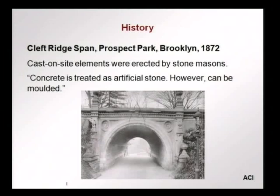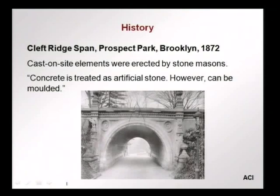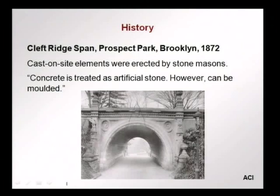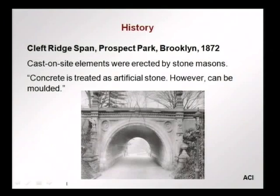If we go back in history and look at initial applications of concrete for structural purposes, we come across this very nice arch — small though elegant — from Prospect Park, Brooklyn, USA, built in 1872, where concrete was essentially used to replace stone blocks. This was erected by stone masons using cast-on-site elements, blocks of unreinforced concrete, and concrete was essentially treated as an artificial stone. The advantage over stone is that it could be moulded and given a certain shape instead of having to be sculptured or carved.